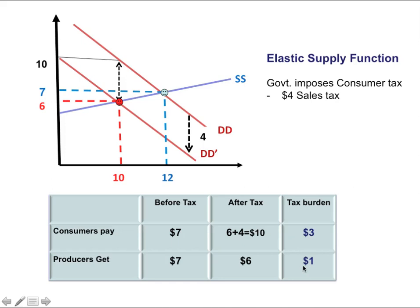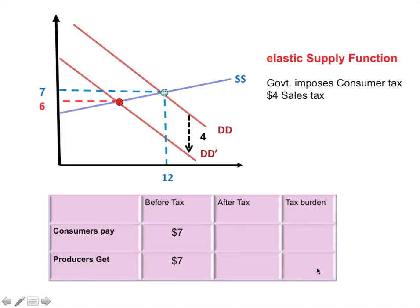So the tax burden is shared between consumers and producers. Producers are paying one dollar of this tax out of their own pocket in terms of receiving a lower price for the product. Producers end up paying one dollar despite the fact that the sales tax was only imposed on consumers. The imposition of the sales tax on consumers brought down the market price by one dollar — that is the tax burden for producers.